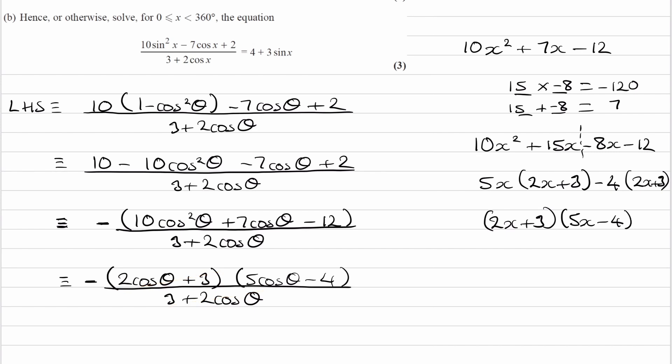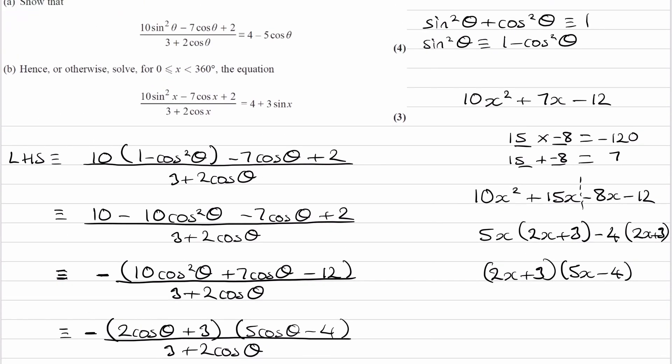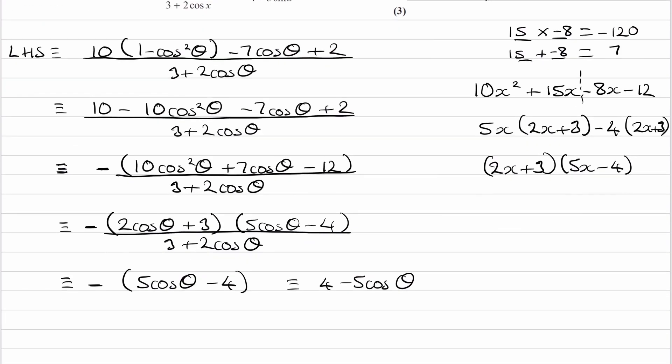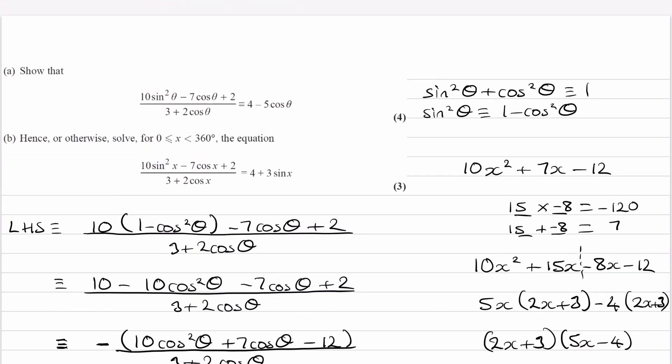So then I would then write my next line as minus 5 cos theta minus 4, or 4 minus 5 cos theta, multiplying out the minus sign. And hopefully that is our right-hand side, yes. So then to end our proof, triple equals right-hand side. So that is part A done.